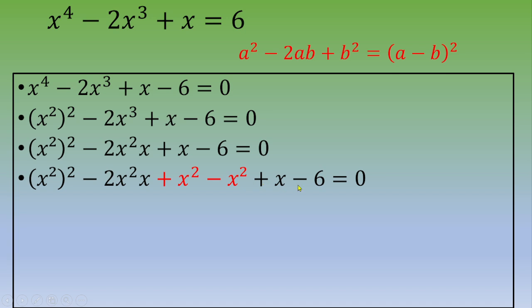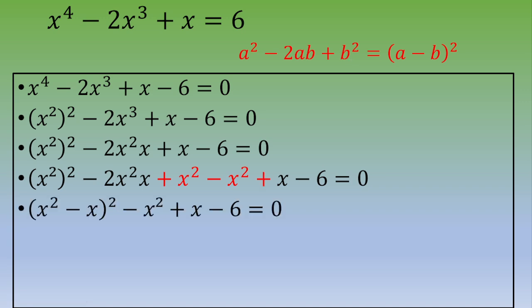We now have (x²)² - 2·x²·x + x² - x² + x - 6 = 0. The first three terms match the pattern a² - 2ab + b², which gives us (x² - x)². So the equation becomes (x² - x)² - x² + x - 6 = 0.